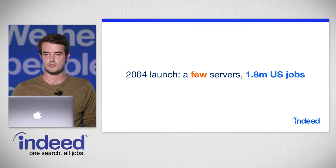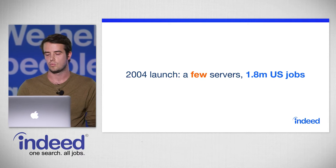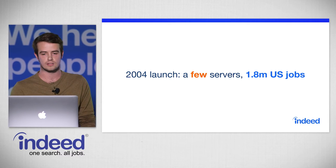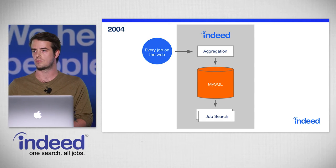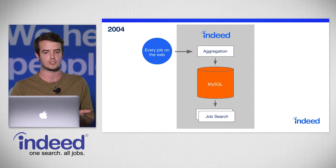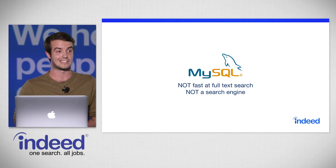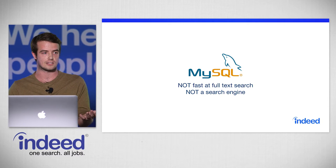From the very beginning, we like to start things as simply as possible. In 2004 when we launched, we had just a few servers searching jobs in the United States only, with about 1.8 million jobs. We had an aggregation engine that would crawl the web for jobs and store them in a MySQL server. MySQL is a relational database accessed across the network, but it's not fast at full-text search — it's not a search engine. In particular, it's not fast at searching unstructured text and providing ranked results.